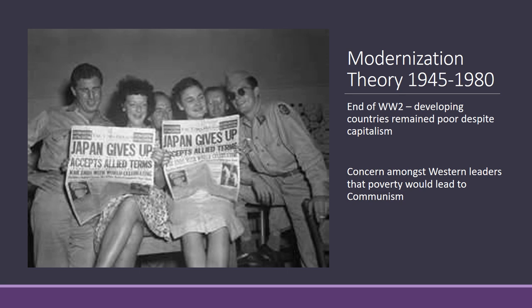Modernization theory comes about in the post-World War II era. At the end of World War II, the world was pretty much split into three. We had the First World Nations — essentially the Allies, the US and Britain, most of Western Europe — and we had the Second World countries, those that favoured communism: most of Eastern Europe and parts of East Asia.